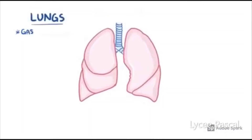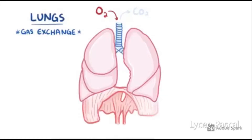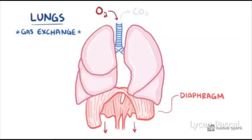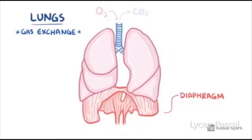The main job of lungs is gas exchange — breathing in oxygen and getting rid of carbon dioxide. The diaphragm will pull down and the lungs will expand so oxygen will enter. When breathing out, or exhalation, carbon dioxide will leave the lungs, the diaphragm will move up, and the lungs will return to their normal size.